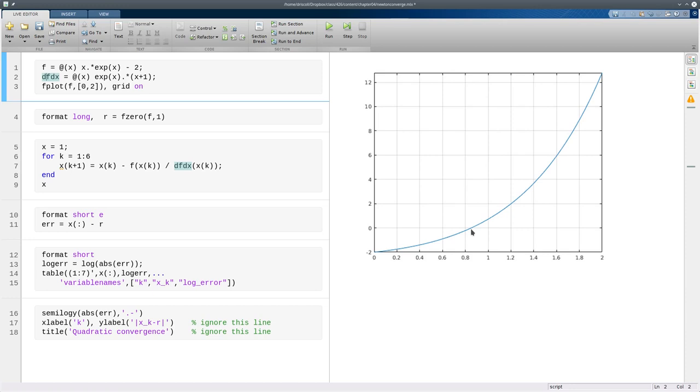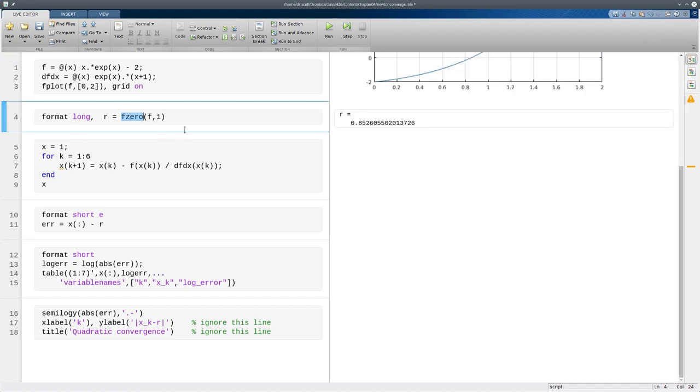Now I don't know exactly where that is because it's not easy to solve this equation for x, so I'm going to use f0 in order to get what we'll call the exact root. So it's about 0.853.